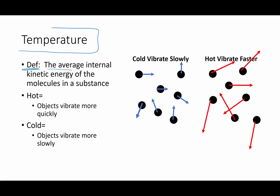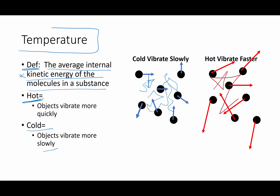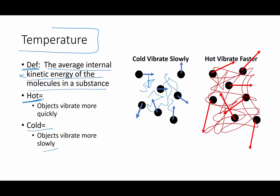Temperature is defined as the average internal kinetic energy of the molecules in a substance. Hot is defined as molecules that are moving really, really quickly — high kinetic energy means an awful lot of velocity. Cold molecules vibrate very, very slowly. When those molecules get hot, you're making them move with a much higher velocity and much faster rate of speed. So temperature really is talking about the internal kinetic energy of the molecules inside of something.